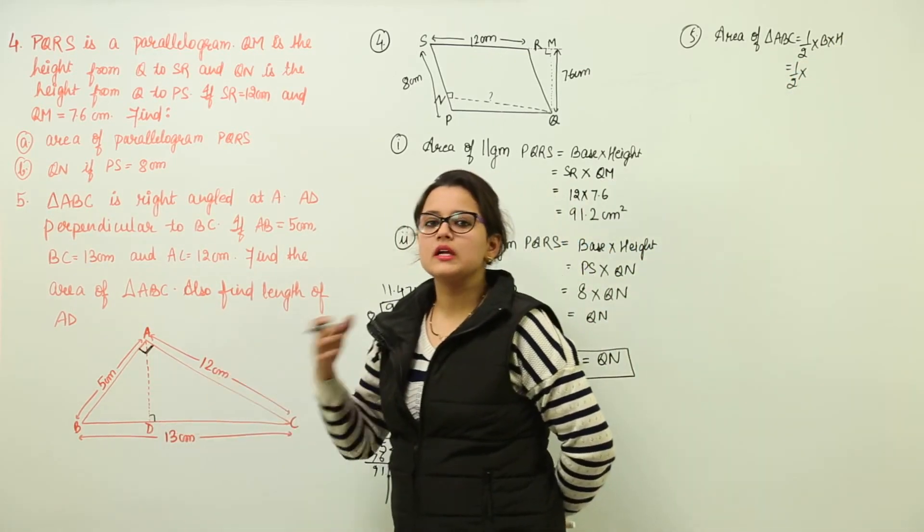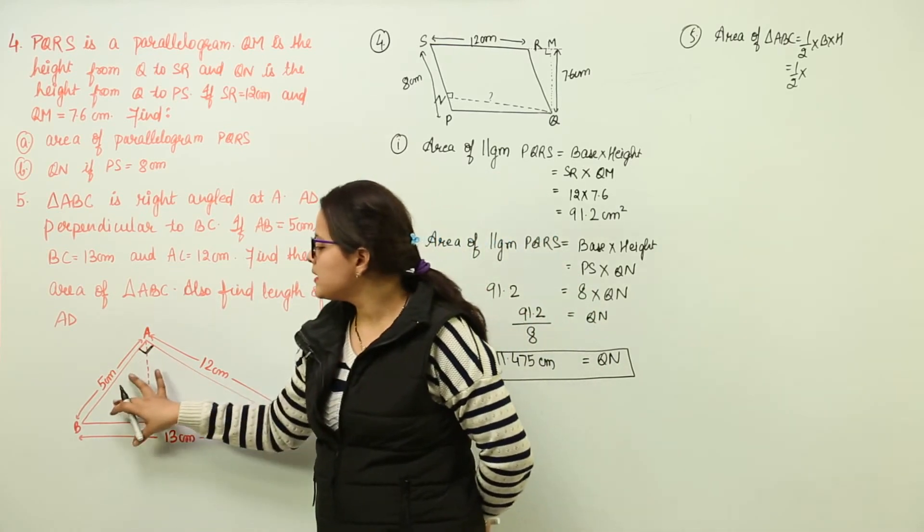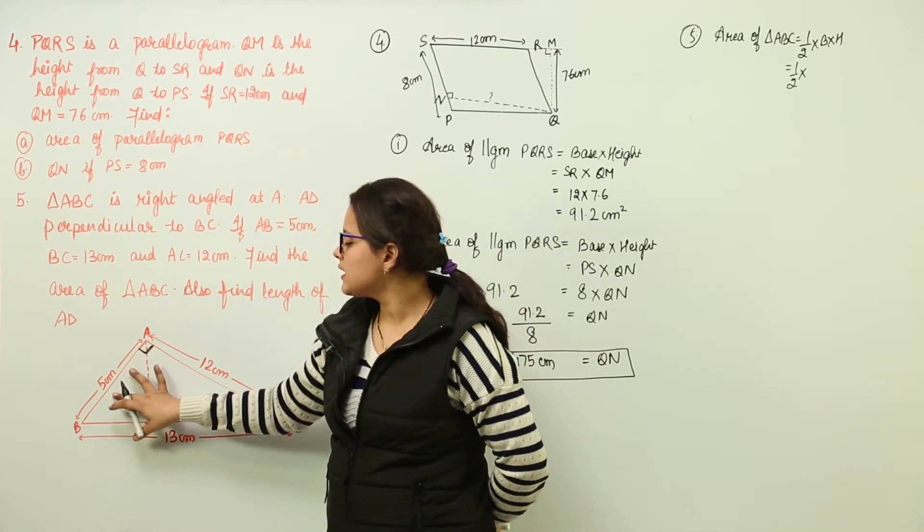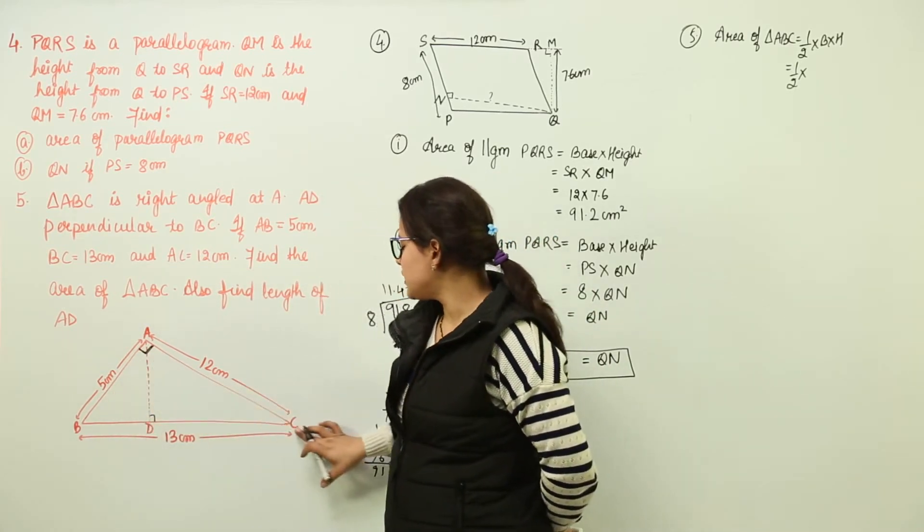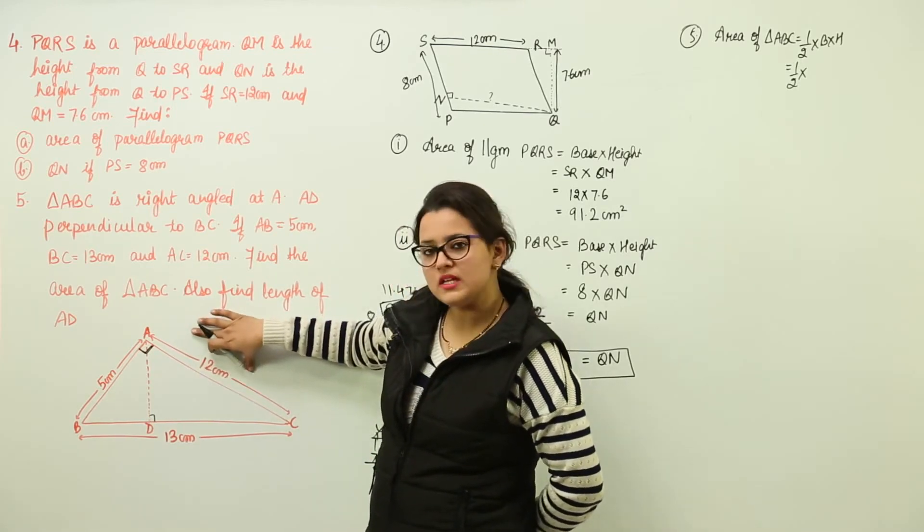Now what is going to be the base? Because it is a right angle triangle, I am going to take AB as the base. If AB is taken as the base from the opposite vertex, the perpendicular drawn is represented with AC.